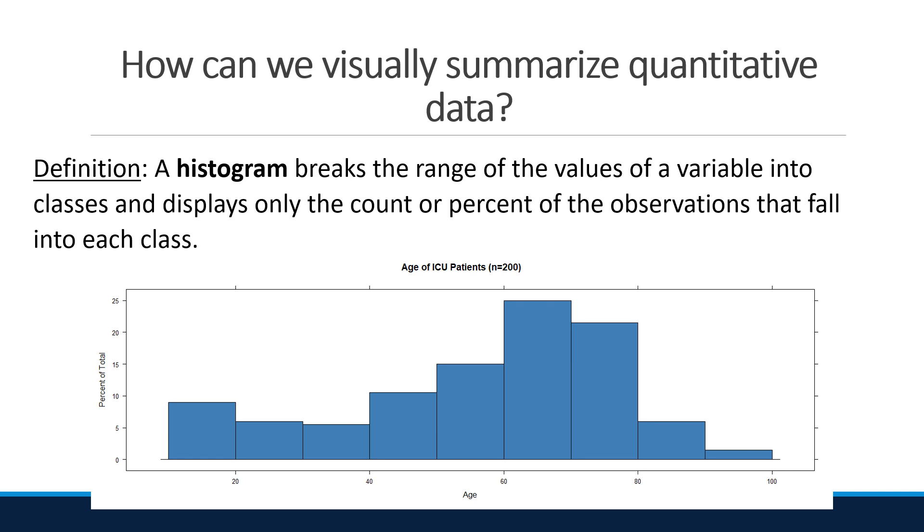A majority of patients fall in the 50 to 80 range, suggesting that the center of the data is located in this range. The plot allows us to quickly assess this information, whereas looking at the raw data, this would be hard to see.